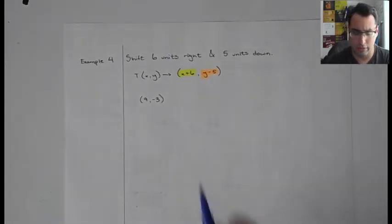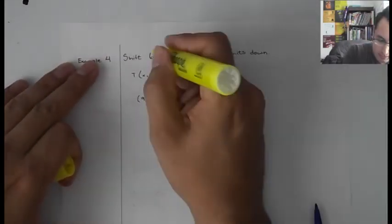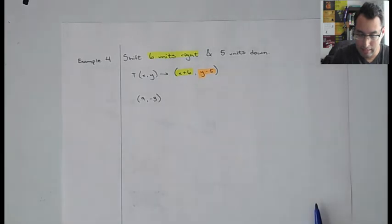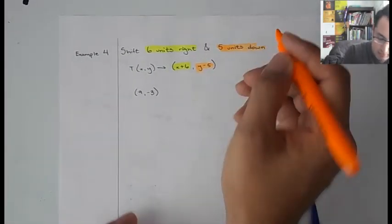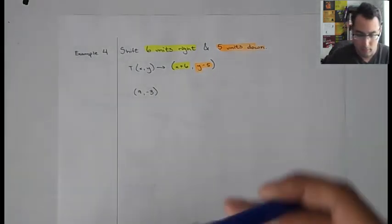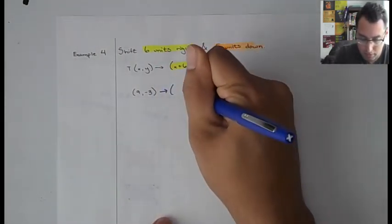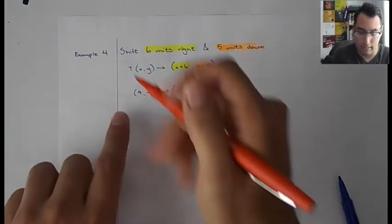We're just going to change in two different directions. So we have shift six units right. That is represented by x plus six. And five units down, that is y minus five. Okay. So here, let's go ahead and put in plus six and minus five. Let's plug in these values for x and y.